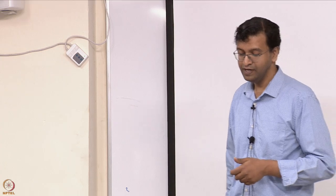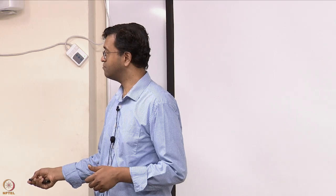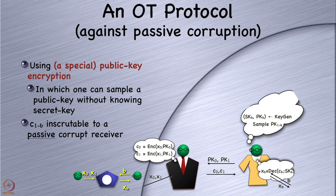This is secure only against a passively corrupt receiver. If she were actively corrupt, there's nothing preventing her from knowing both secret keys. As for the sender: it doesn't learn anything about the bit b, because these two public keys are distributed in the same way — whether sampled using key generation or in this special way, the distribution is the same. So the sender's view is independent of bit b, and even a computationally unbounded sender learns nothing about b.